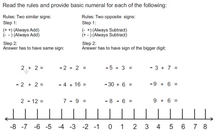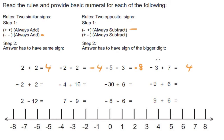So that makes our life very easy. Two plus two is equal to four. Negative two minus two is equal to negative four — two similar signs. Negative five minus three: five plus three is eight, we add these numbers, and the answer carries the negative sign, so this is negative eight. Negative three plus seven: two opposite signs, we subtract. Seven minus three is four, and the answer carries the sign of the bigger digit, so this is positive four.